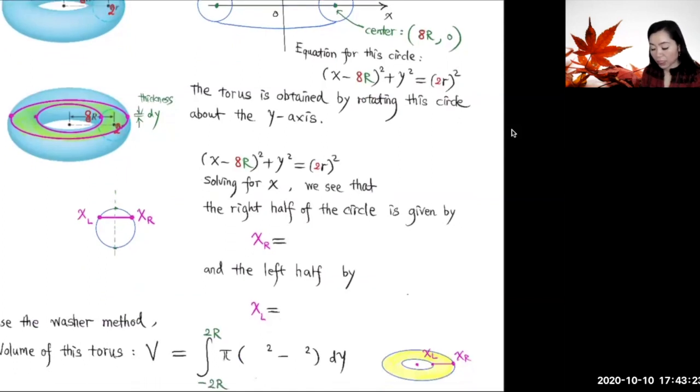Now if you try to find the cross section area here, we need to know the x-coordinate for this point, and also x-coordinate for this point over here. This is on the right side of this half circle, this is on the left side of the half circle. Given this equation for the circle, we can solve for x.